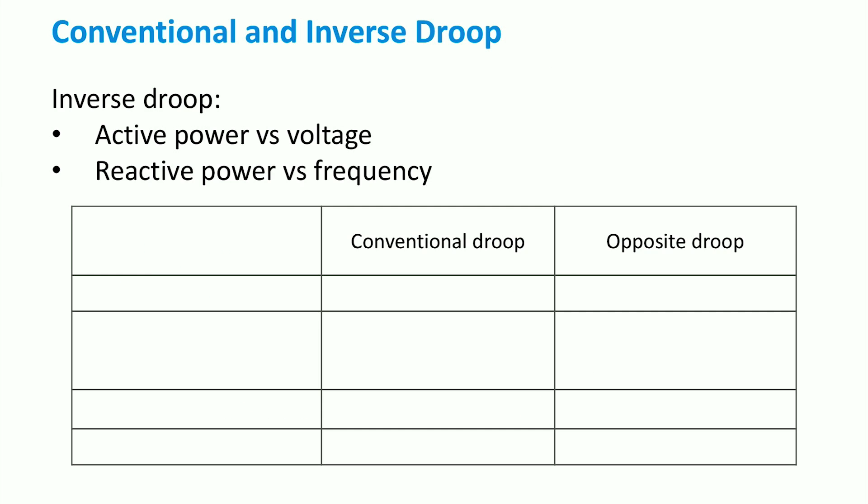In the case of inverse droop control, real or active power is controlled by a voltage droop, while reactive power is controlled by a frequency droop.